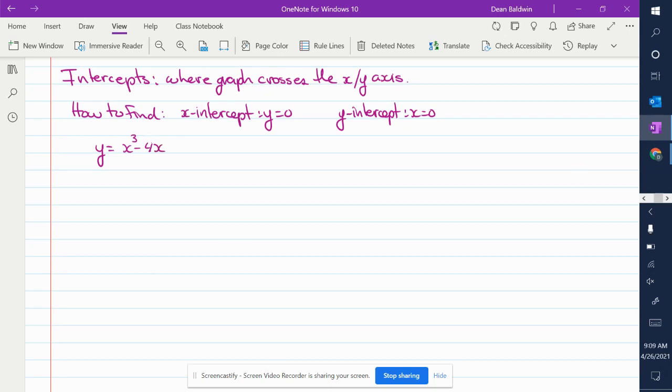So if this is my function, y equals x cubed minus 4x, and I ask for the y-intercept, what do I do? What do you do? We just go x equals zero, plug it into the equation. Obviously you don't need to actually show all this, but yeah, y is equal to zero.